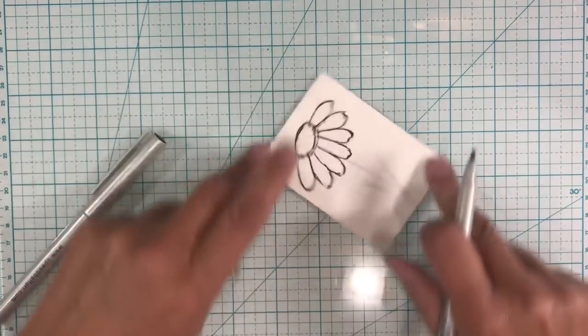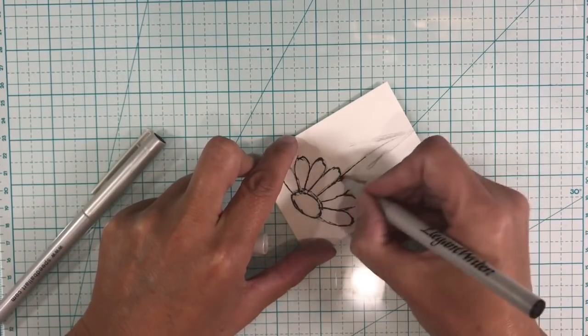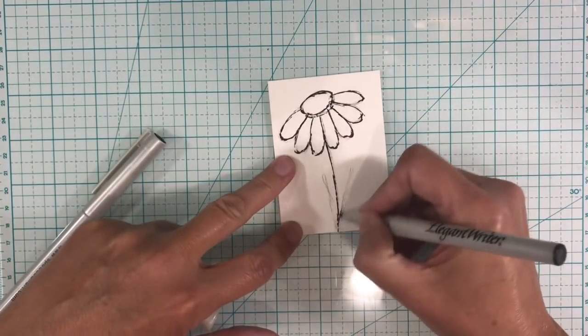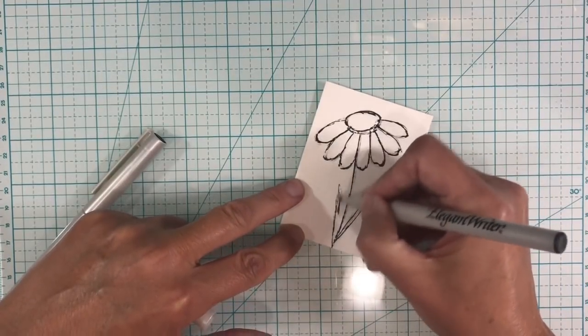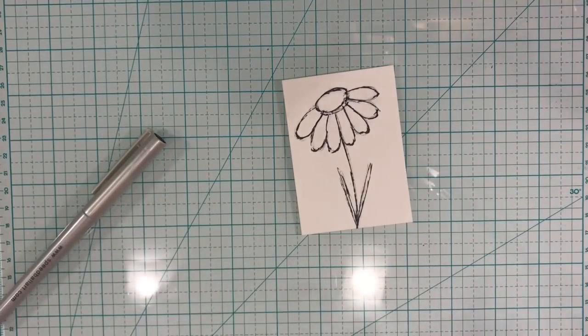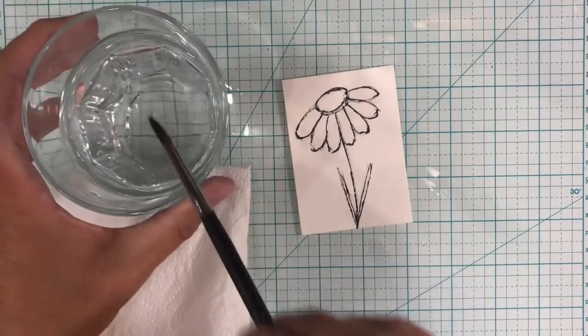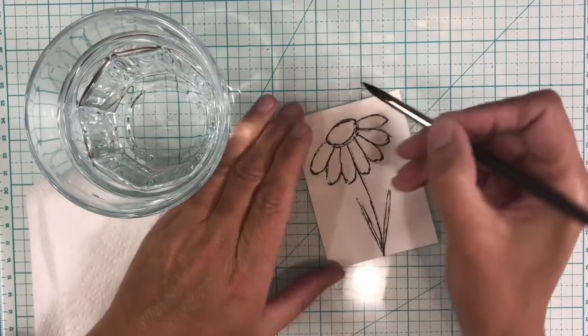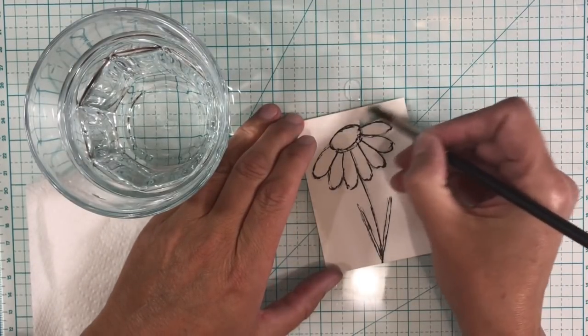So I'm just going to trace over my pencil marks and then I can rub these out in a little while. Let's just go round my flower like this. That will do and then we can do the stem whilst we're at it as well. Just really loose and scribbly, nothing realistic here. My drawing skills are just not up to it.